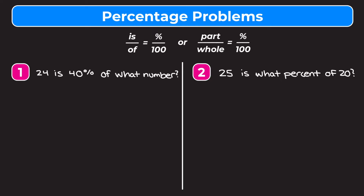So just a little refresher: we have these proportions that say 'is over of equals percent over 100,' or 'part over whole equals percent over 100.' These are basically the same thing, just written in different ways. What you need to remember is that 'is' is associated with the part, and 'of' is associated with the whole. The proportion is just to help you pull out the different parts when reading the questions.